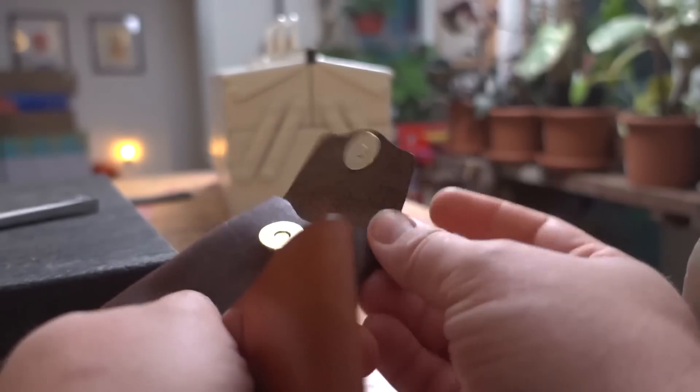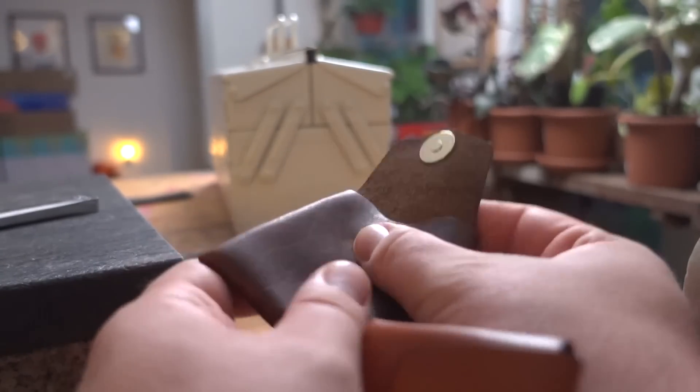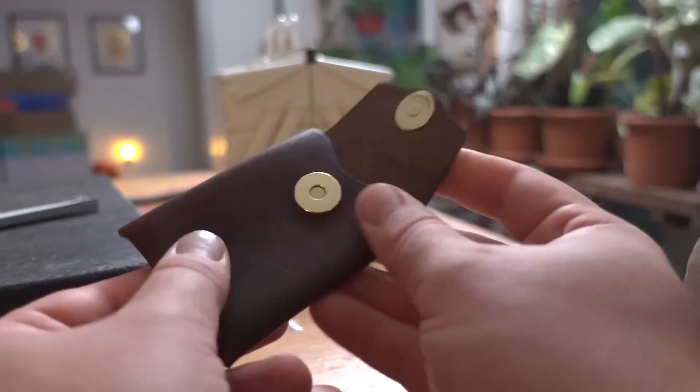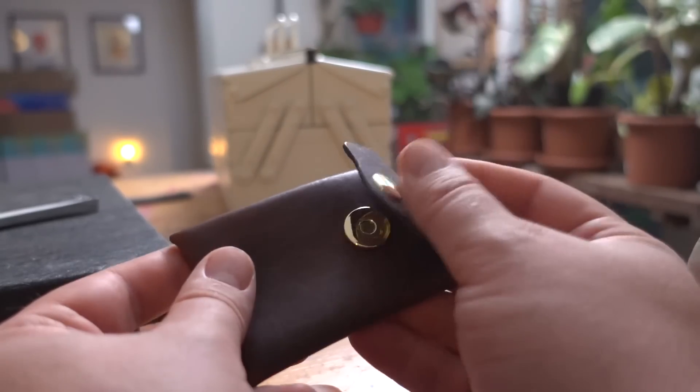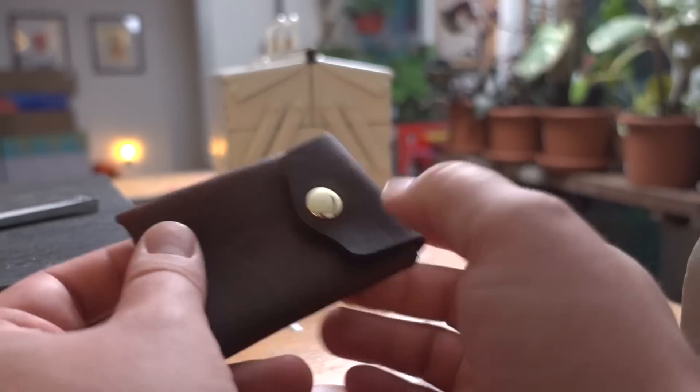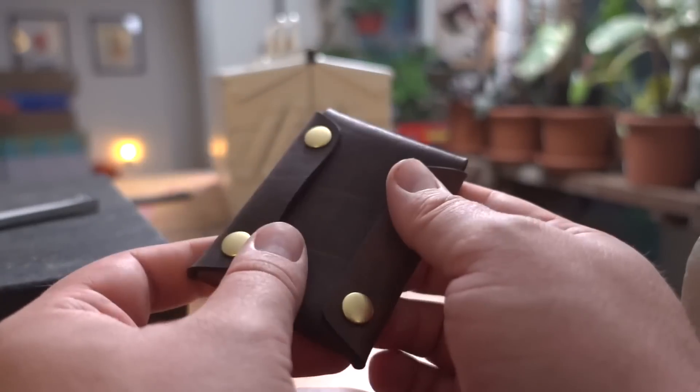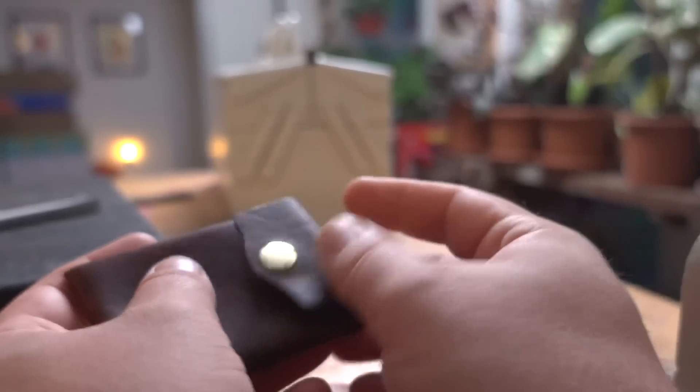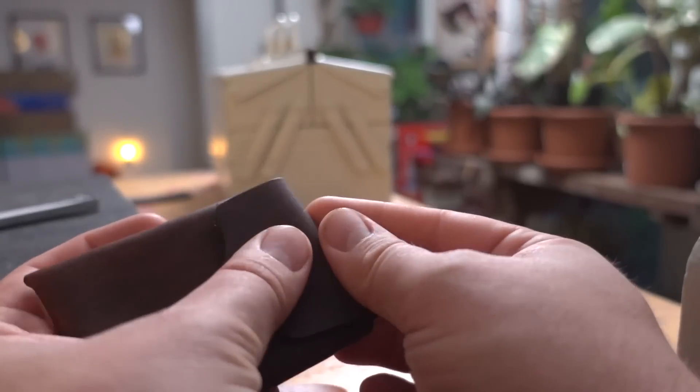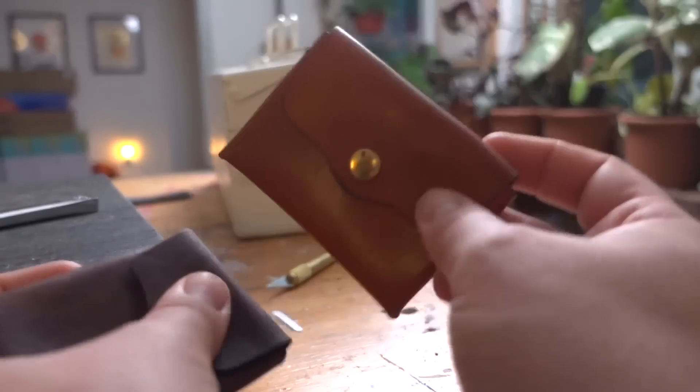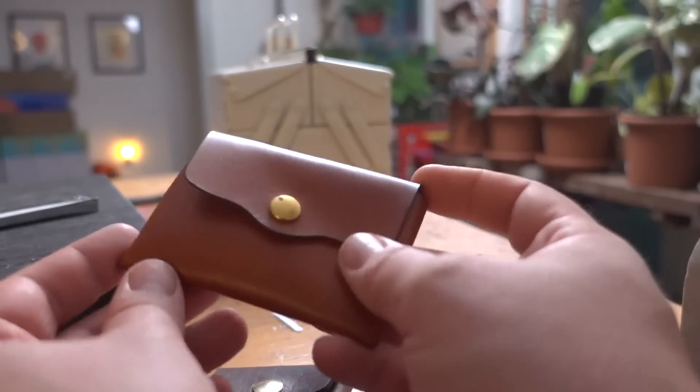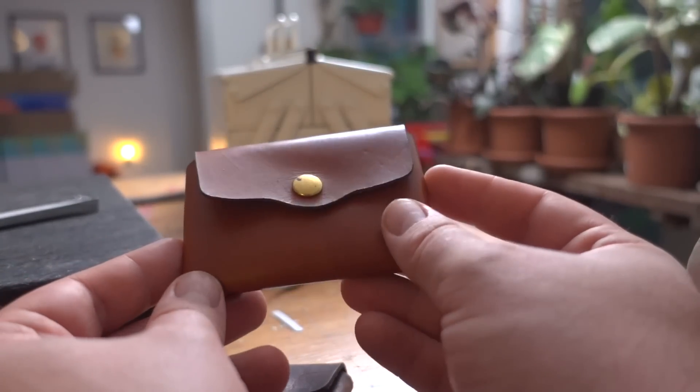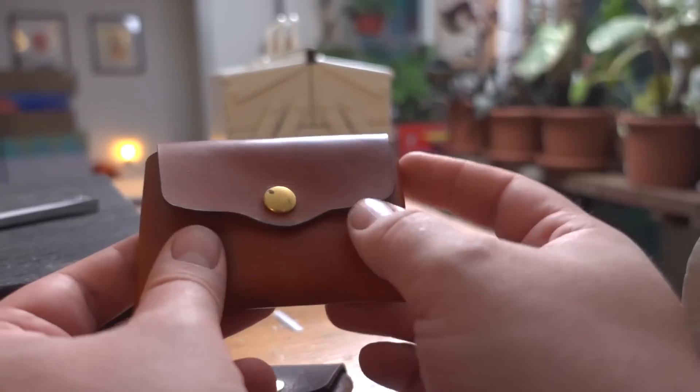I would highly suggest going with either a 16 or 18 millimeter magnetic clasp from Buckle Guy because it makes this thing pretty much indestructible. There's nothing to break on a magnetic clasp. Tyler was done using this pattern - he used it to raise funds around the Boston Marathon. He was like, hey I'm done with it, you can sell it on your site now.